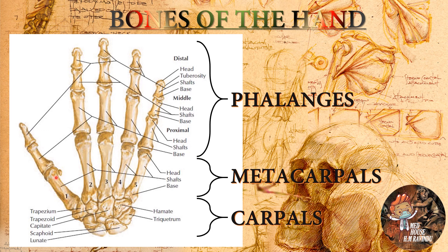There are five metacarpal bones. The phalanges bones can be subdivided into three parts: the distal part, the middle part, and the proximal part. Only the thumb has two phalanges bones, while all other fingers have three phalanges bones.